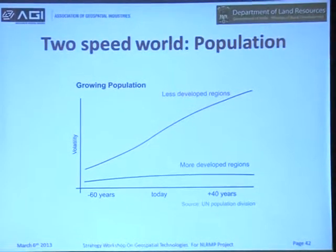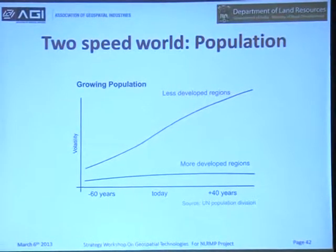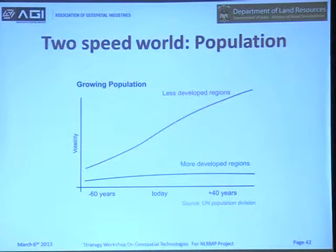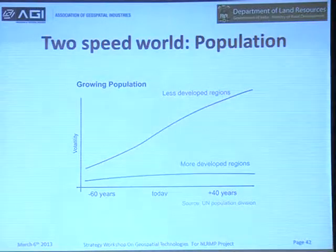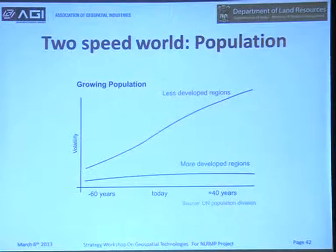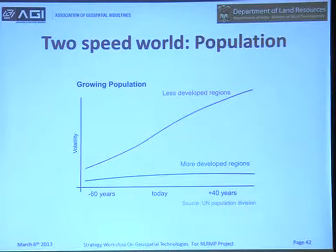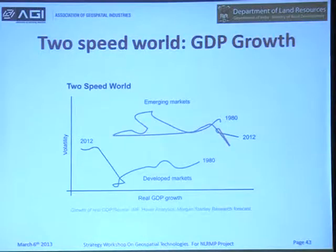There are certain demographic trends that have evolved after the economic crisis. One is that of less developed regions, which are characterized with very high population growth, as you see from this graph, and very high GDP growth rates. Meanwhile, the more developed nations of Western Europe or North America have been characterized by slower population and economic growth.